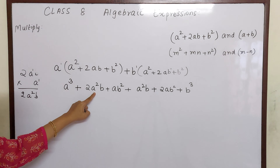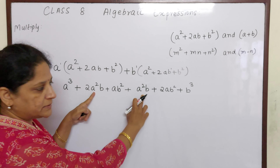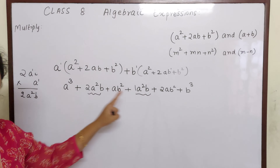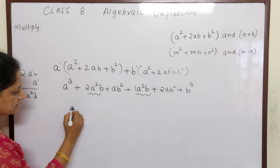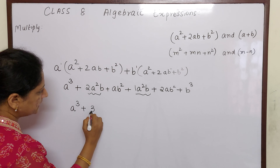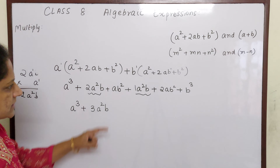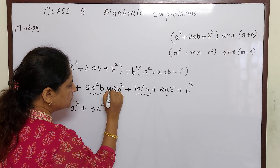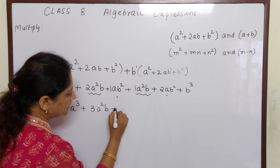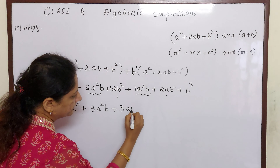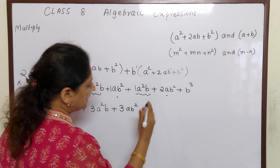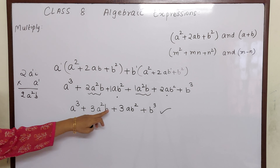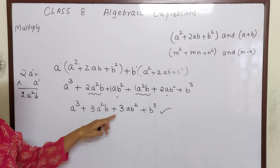Now if you see children, this a²b and this a²b are like terms. If there is no number with a term, that means it is 1. So 2 + 1 = 3, giving 3a²b. Similarly, ab² and ab² are like terms: 1 + 2 = 3, giving 3ab². Bringing down a³, then 3a²b, then 3ab², then b³. Because a²b cannot be added with ab² — they are not like terms. Final answer: a³ + 3a²b + 3ab² + b³.